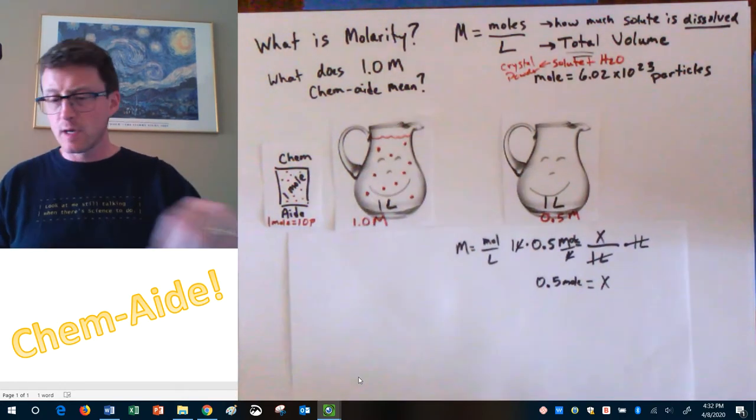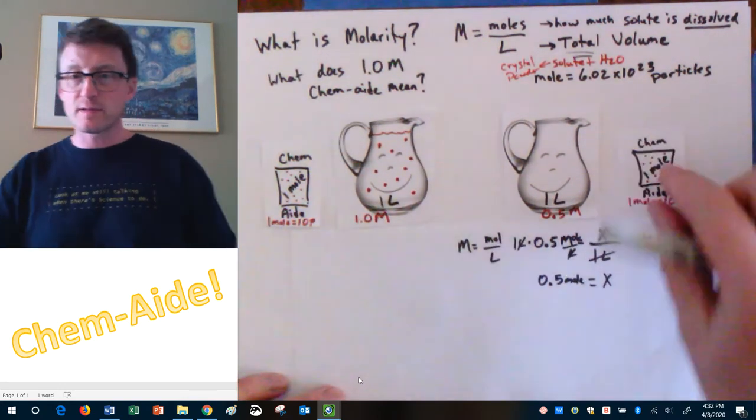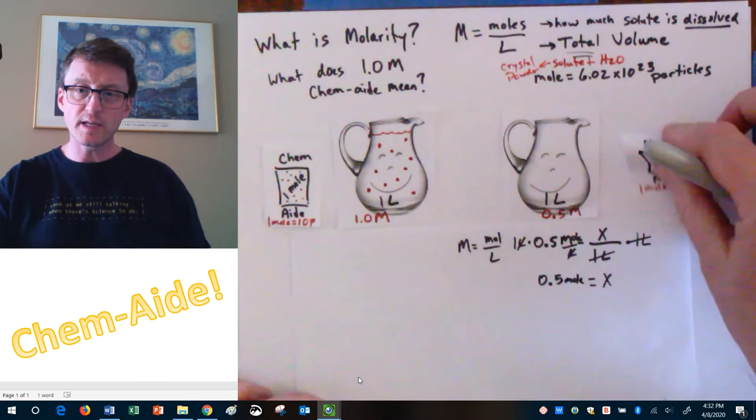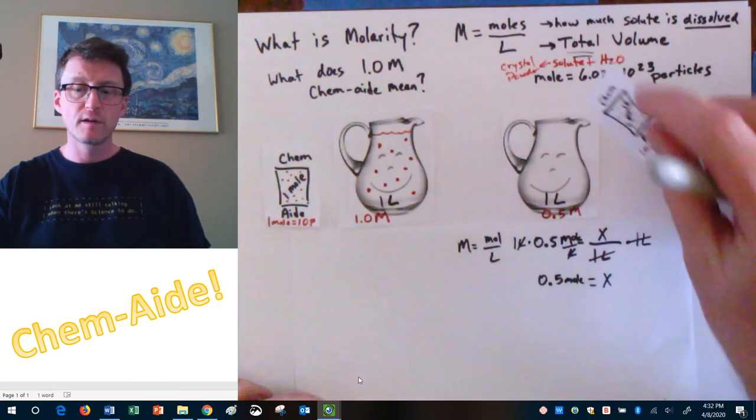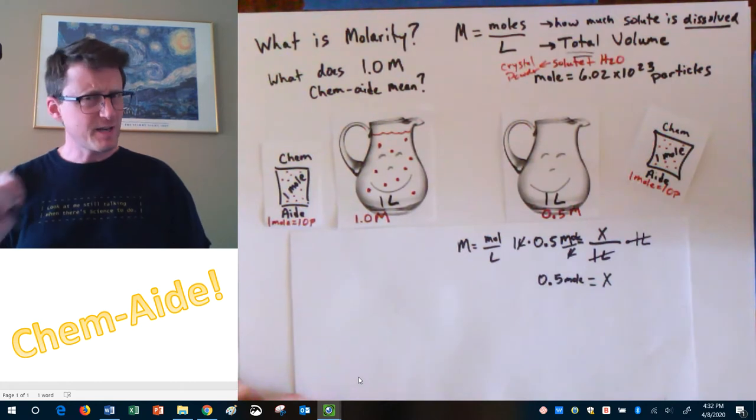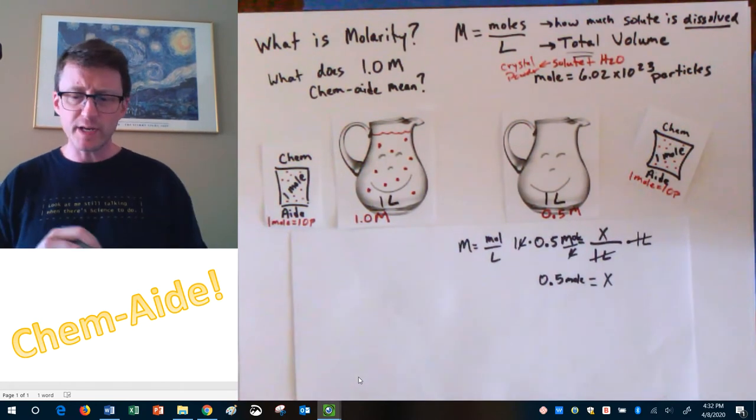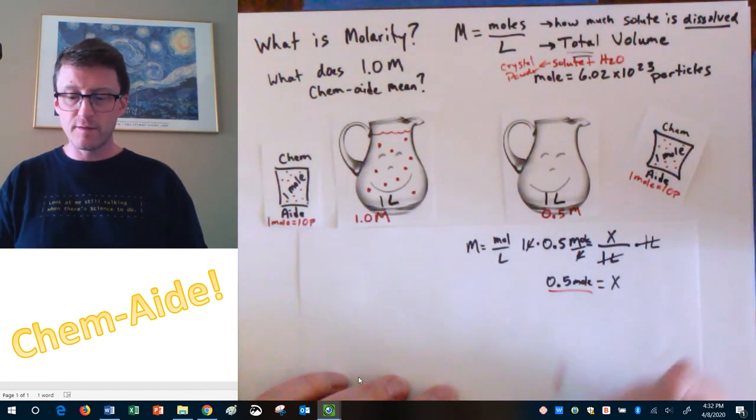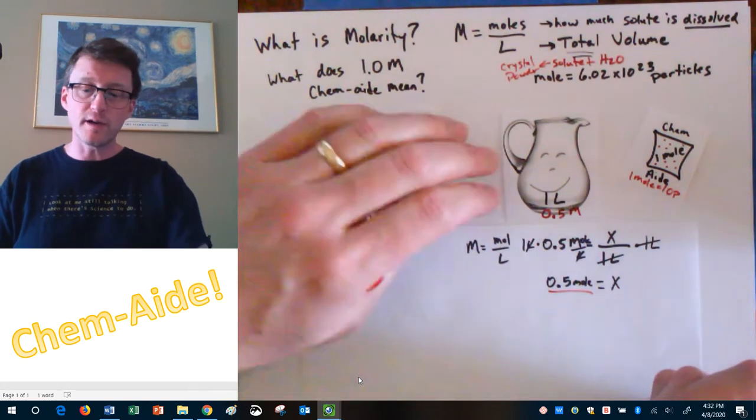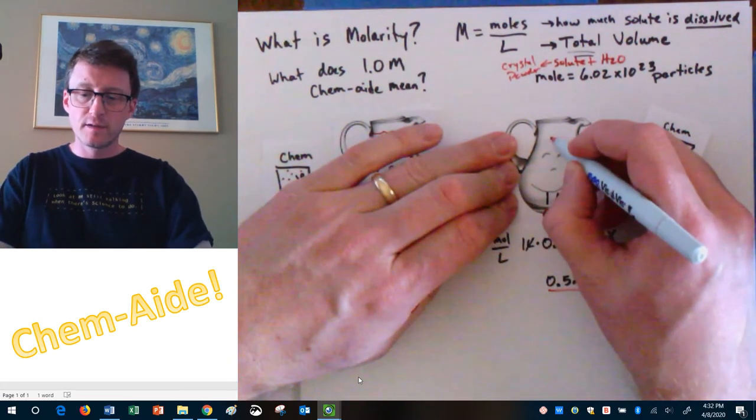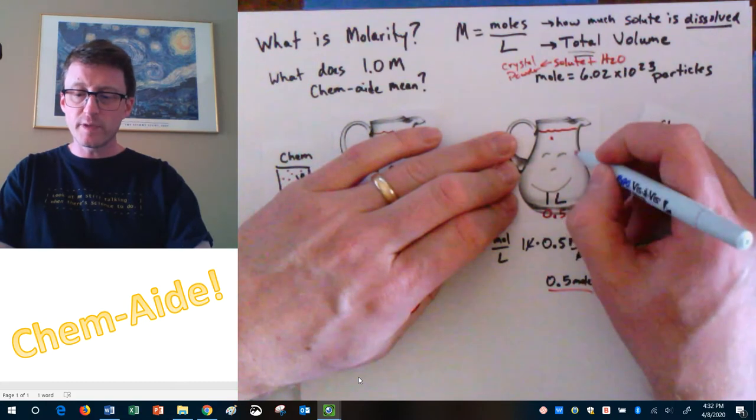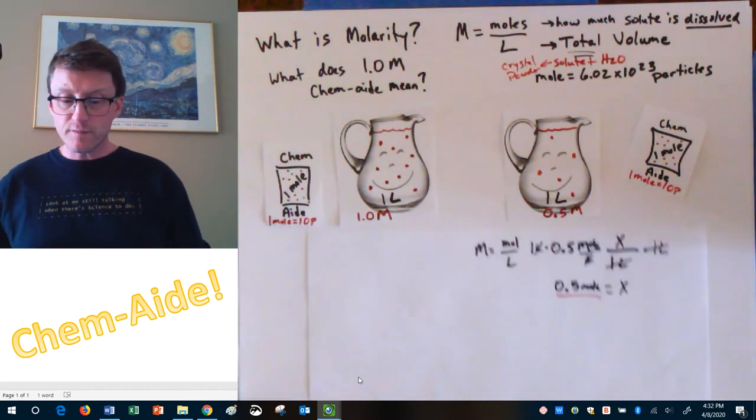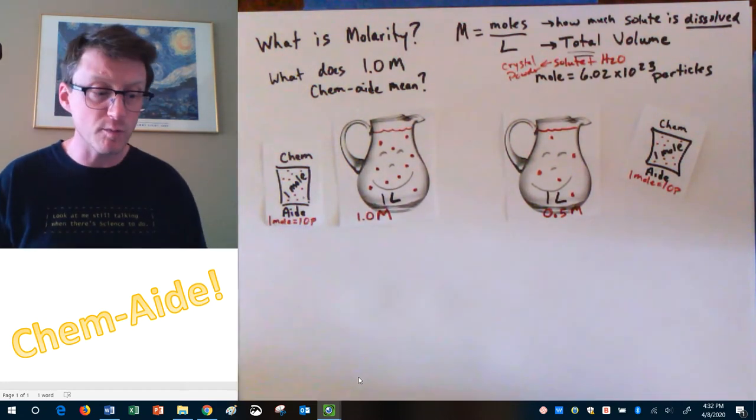How many of my packets do I need then? Well, one packet is one mole. So that means again, I would only need half of my packet. Think about that. How many dots does that have? Well, one mole is 10 dots, but I have 0.5 or half a mole. So I have five dots. There's my liquid, two, three, four, five. Five dots floating around.